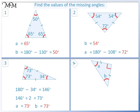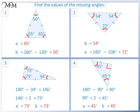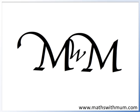Question 4. We are told that one of the angles is a right angle, which is 90 degrees. a and b are the same size. We'll begin by subtracting 90 from 180: 180 take away 90 equals 90. a and b are equal, so we divide 90 by 2. 90 divided by 2 equals 45, so a and b are both 45 degrees. Thank you for watching.